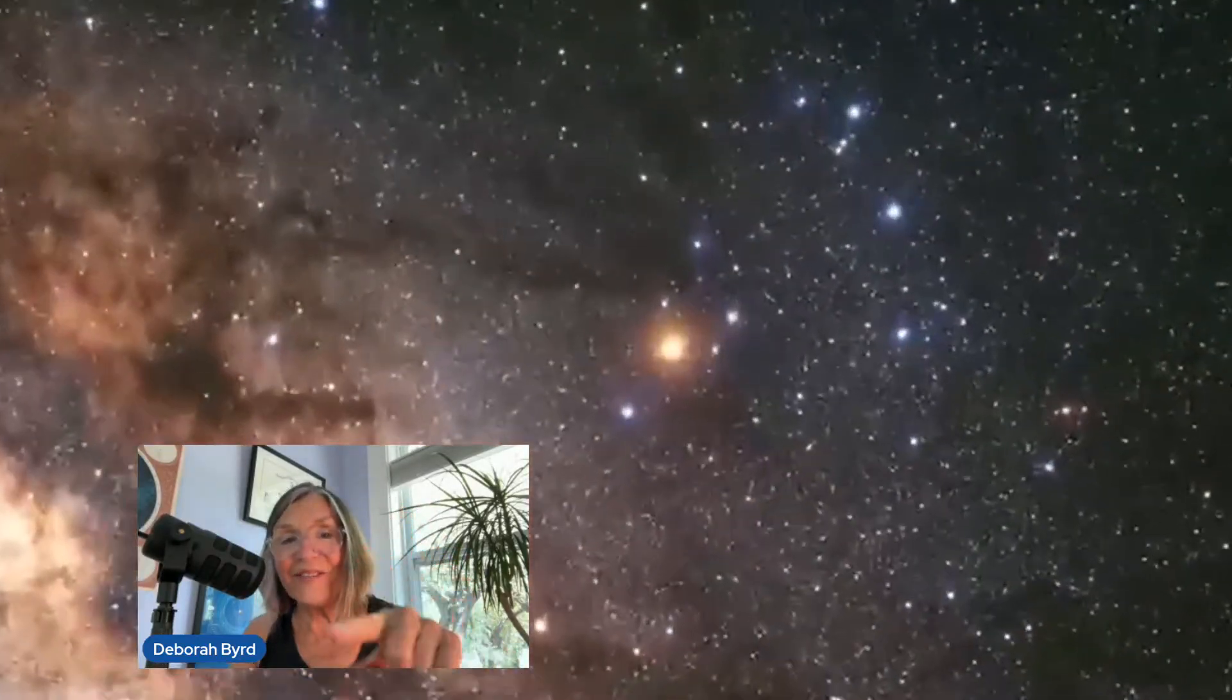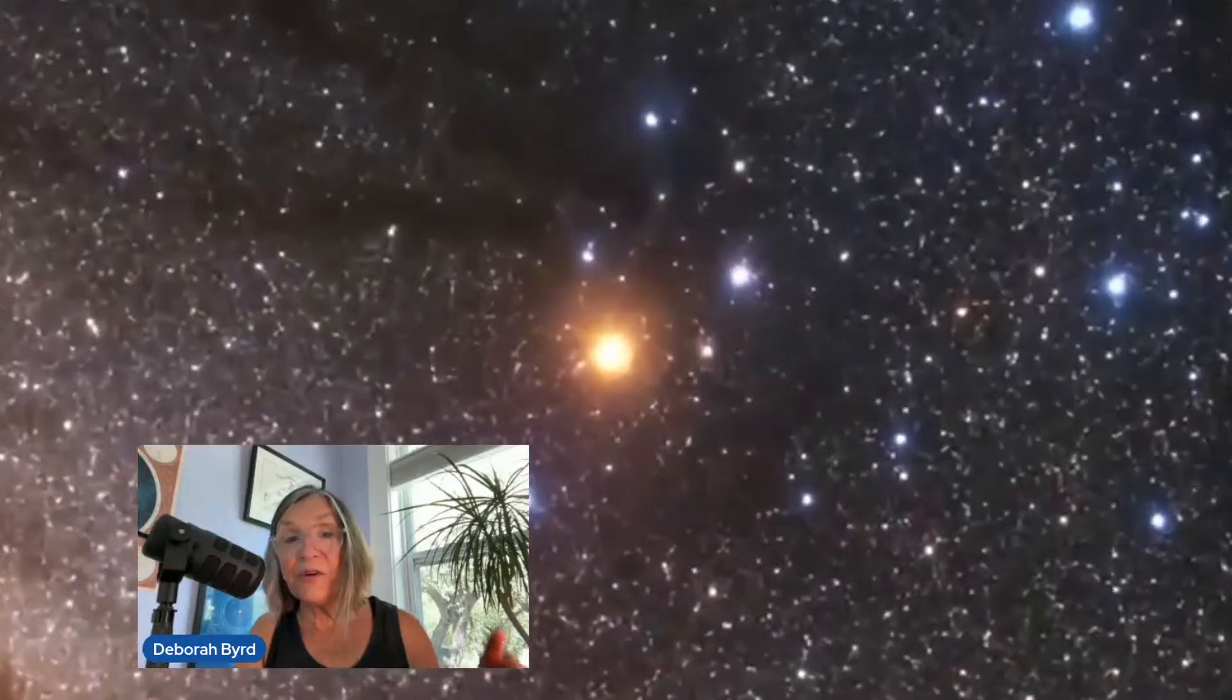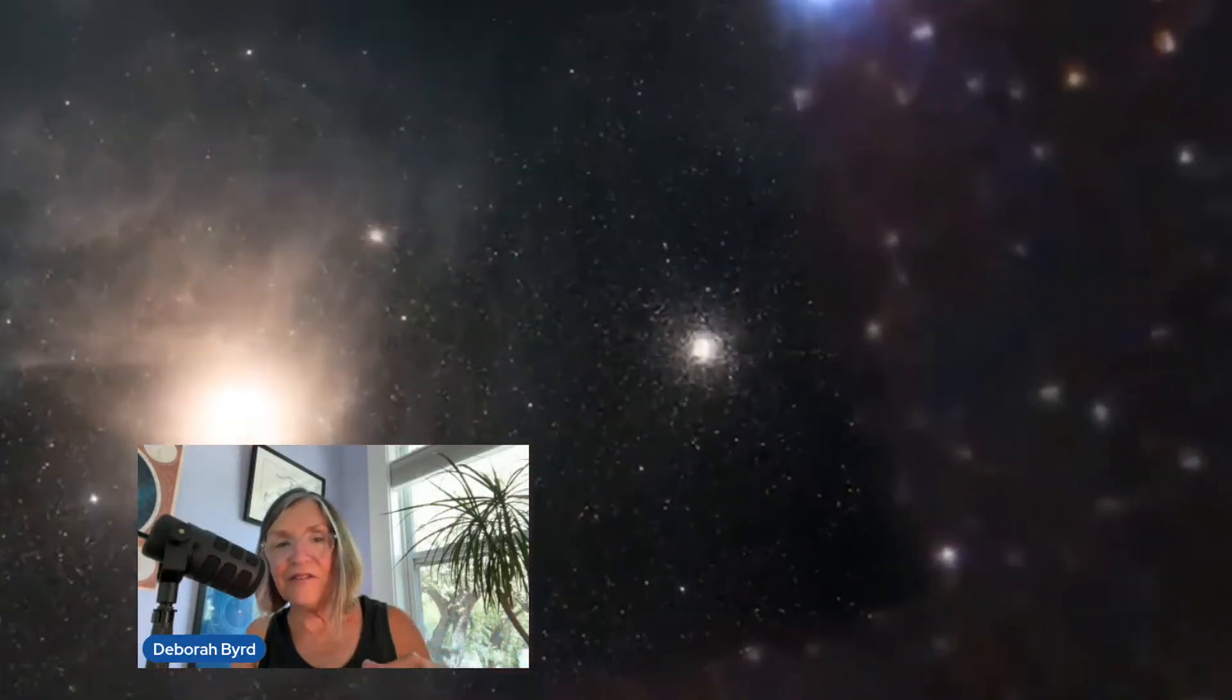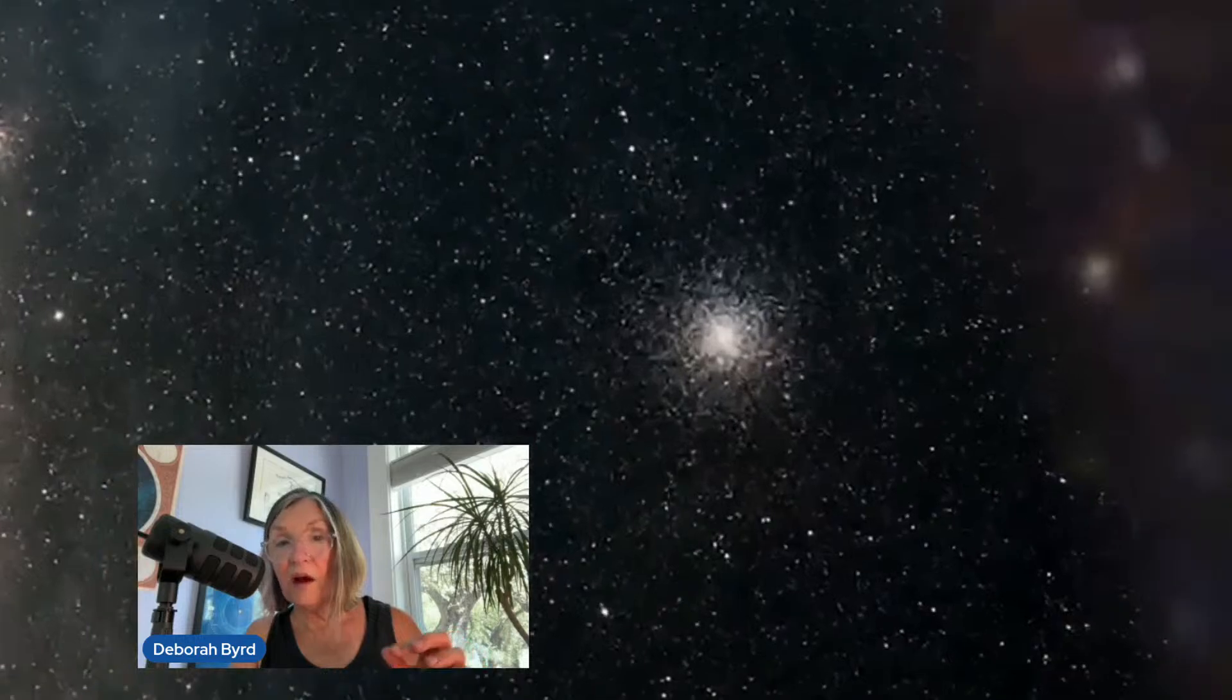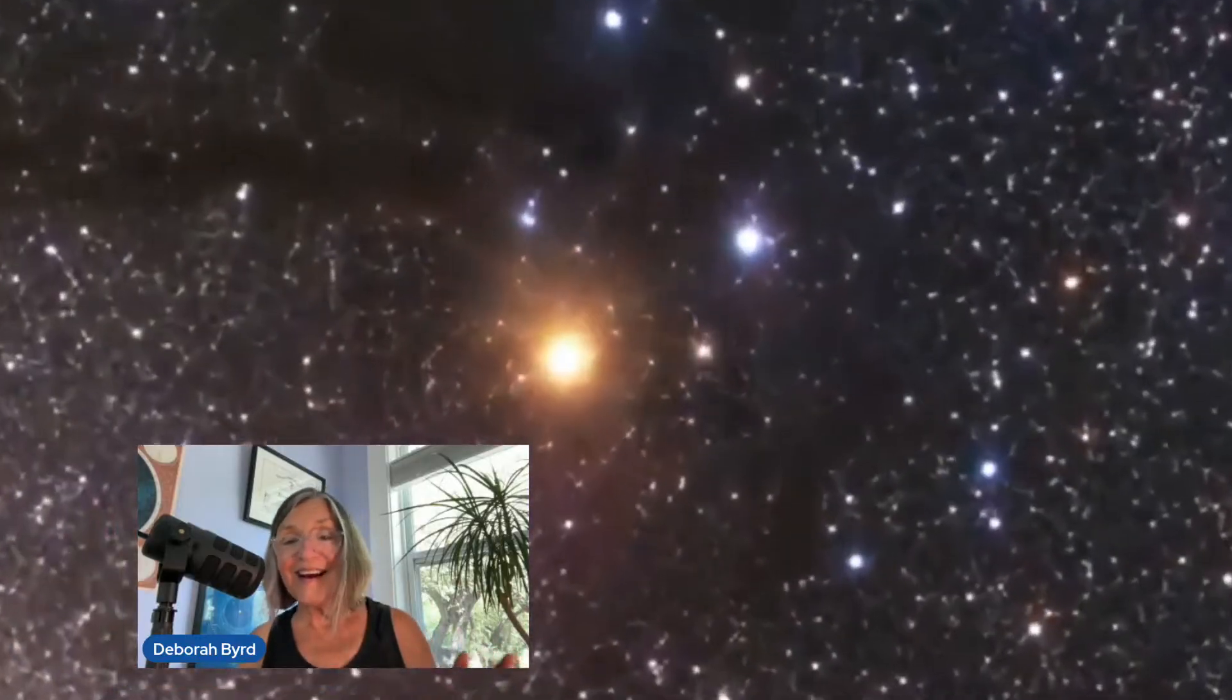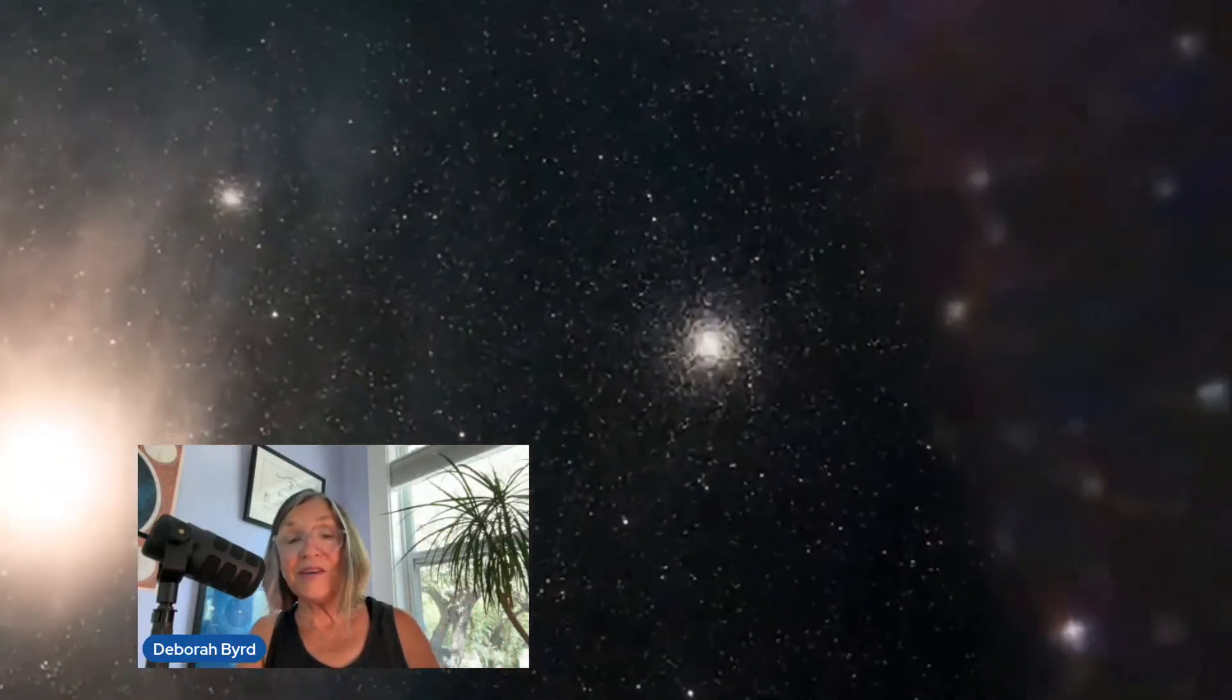See that? That is the red star Antares. And if you look closer with binoculars, you can see this cluster. It's one of more than 150 globular star clusters in our Milky Way galaxy. M4 is the closest globular cluster at only 550 light years away.